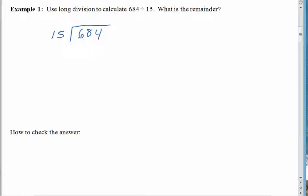15 doesn't go into 6, but 15 does go into 68. 15 goes into 68 four times. So 4 times 15 is 60. And then we subtract. 68 minus 60 leaves us with 8. Bring down the 4. And now we ask ourselves how many times 15 goes into 84. 15 goes into 84 five times, I think. 5 times 15 is 75.